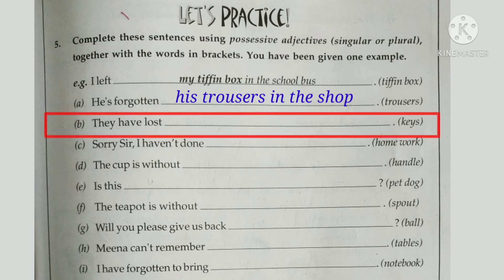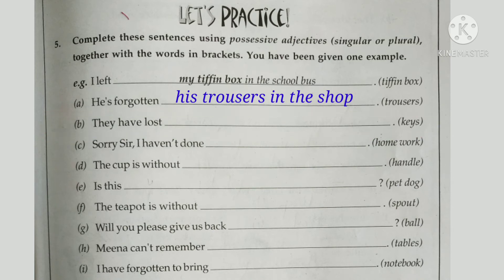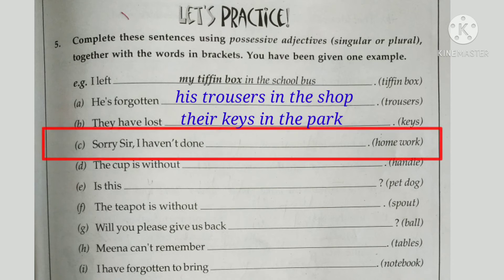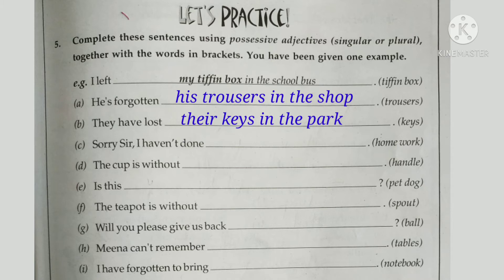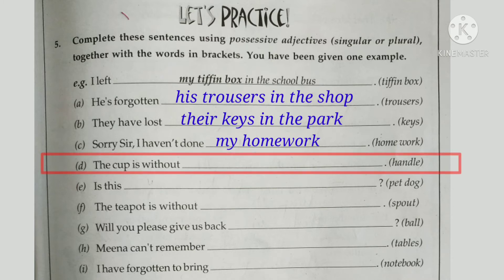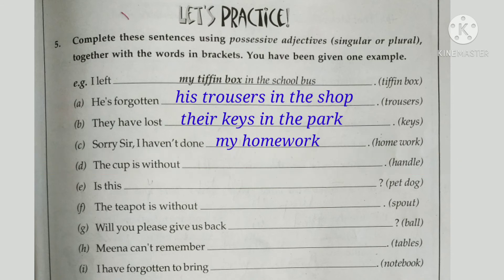Sentence c: 'Sorry sir, I haven't done my homework' — for 'I' we use 'my.' Sentence d: 'The cup is without its handle' — the cup has no gender, so for neuter gender we use 'it,' giving possessive adjective 'its' with no apostrophe. Sentence e: 'Is this your pet dog?' — 'your' is the possessive adjective.